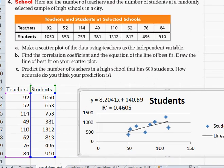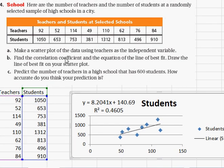We made a scatter plot. We found the correlation coefficient, which in this case was 0.4605, and the equation of the line of best fit. So y being the student population equals 8.2041 times the number of teachers plus 140.69.